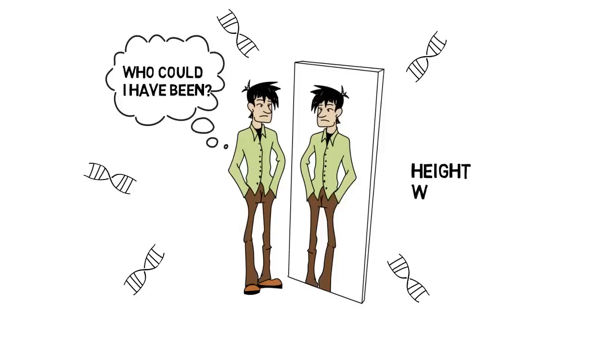Qualities like our height, weight, and looks are called complex traits. They result from the interaction of many genes.